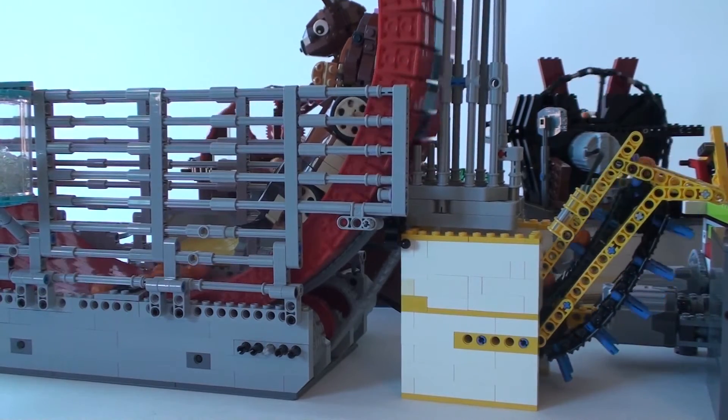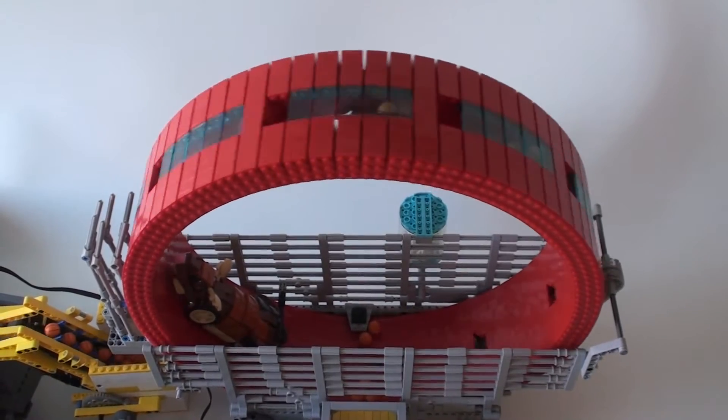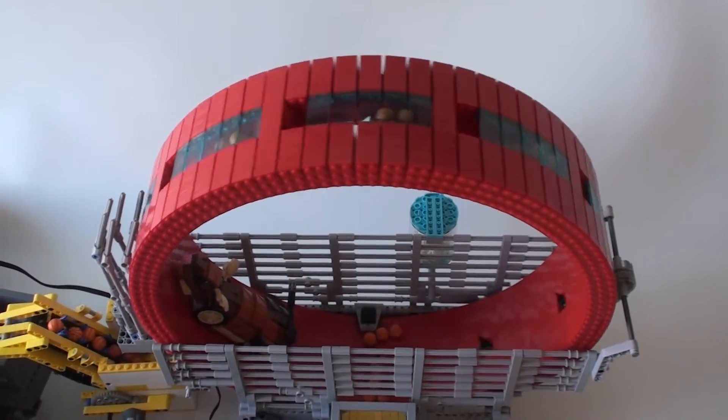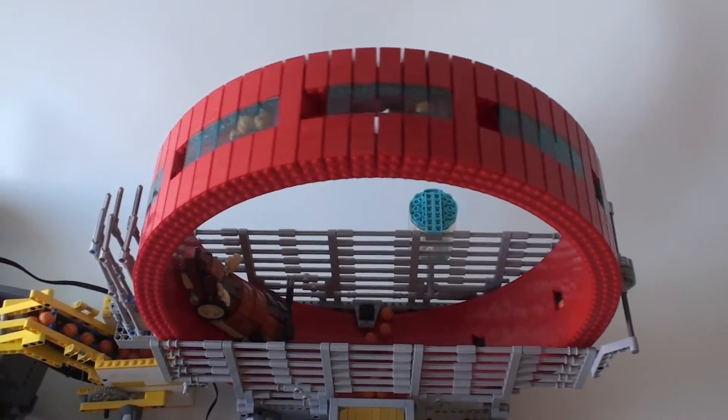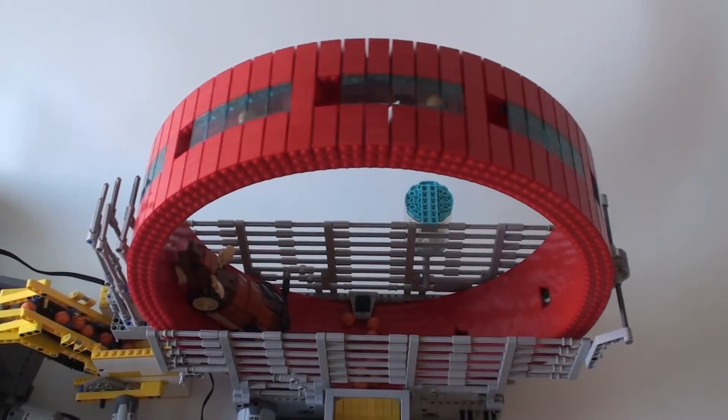And since it was quite dominant before, I simply improved it by making it much smaller so that you can see more of the rest of the module, that is the big red wheel and the hamster inside.